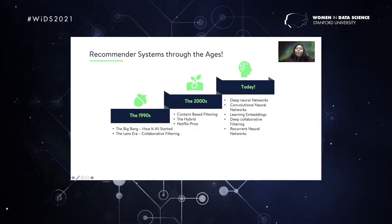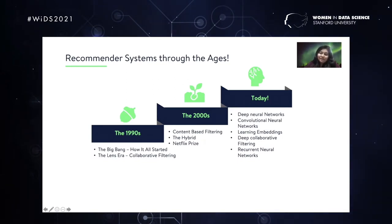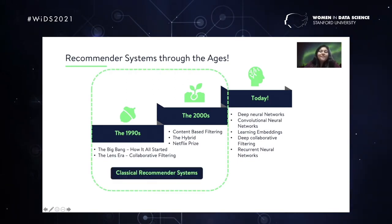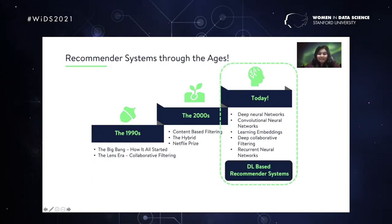What we have planned for you today is a journey of recommender systems through the ages, starting from the 1990s when it was first incepted, all the way to the deep learning architecture that we see and know today. So without further ado, let's get started.